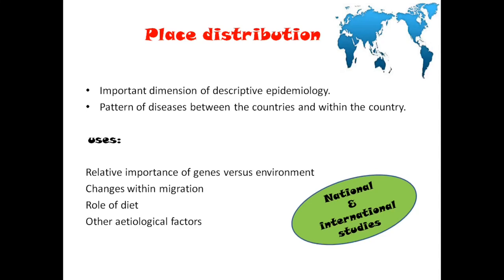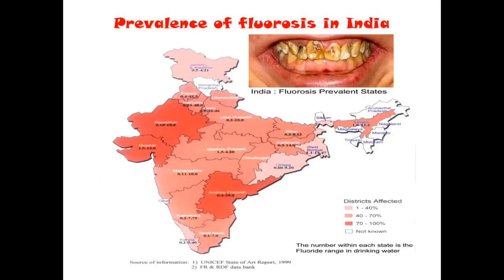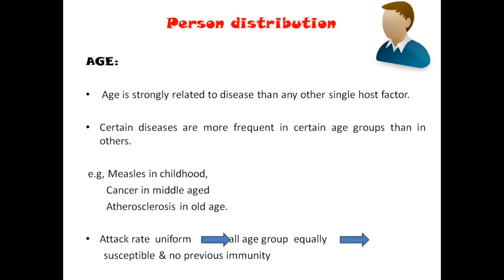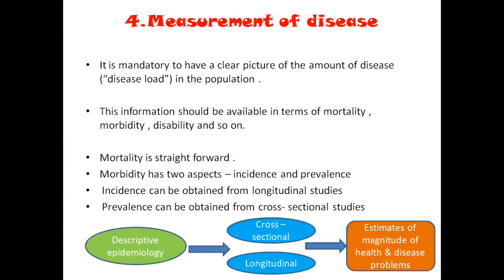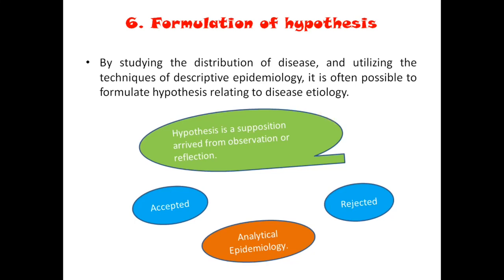The fourth step is measuring the disease based on tools of epidemiology — commonly incidence and prevalence. The fifth step is comparing with different populations and subgroups. Finally we arrive at a hypothesis — a proposition, supposition, or assumption about the cause and outcome. For example: 'cholera could be due to drinking water from that particular pipe or restaurant' — that is our hypothesis. In the next study design, the analytical study, we test the hypothesis. Yesterday we had seen types of epidemiological studies.